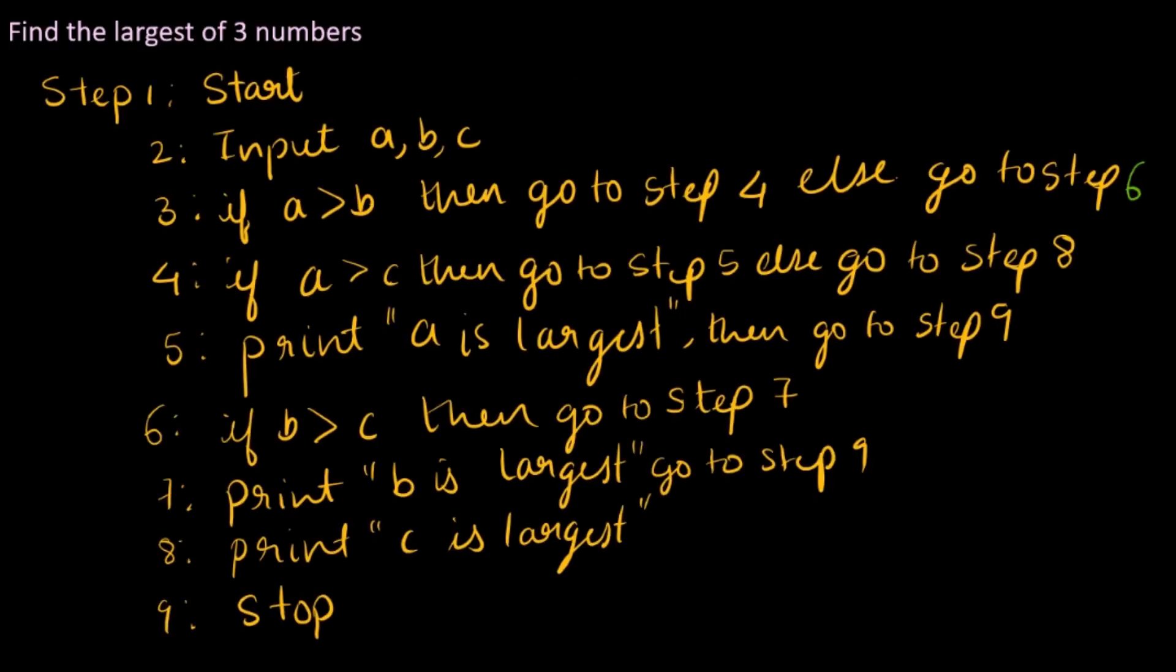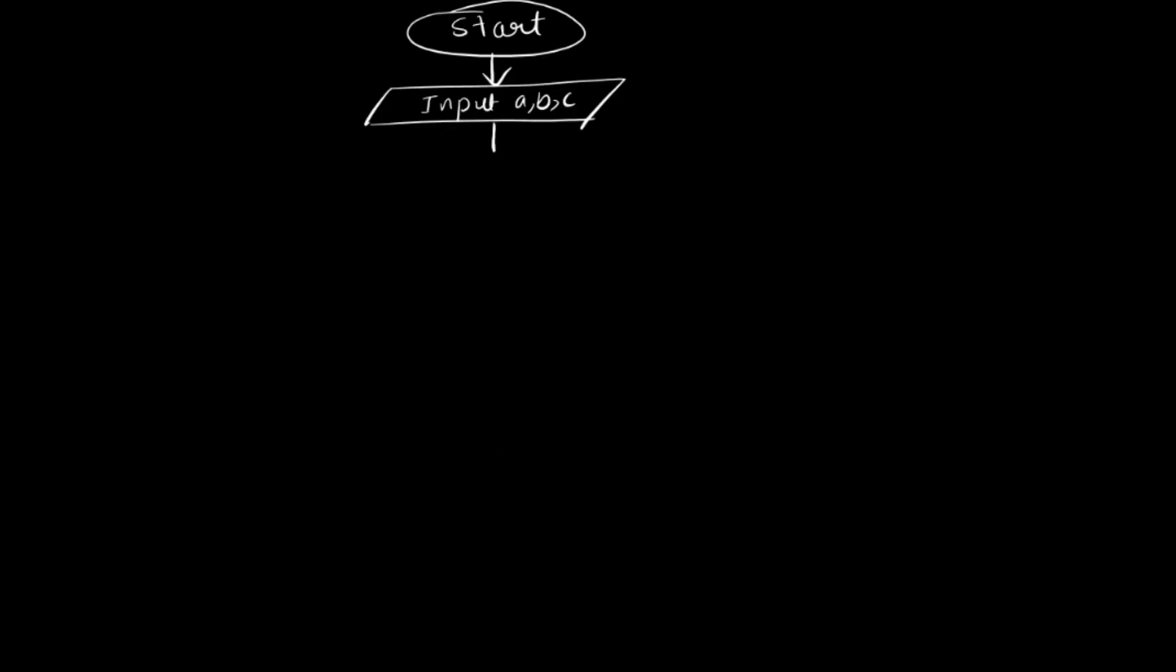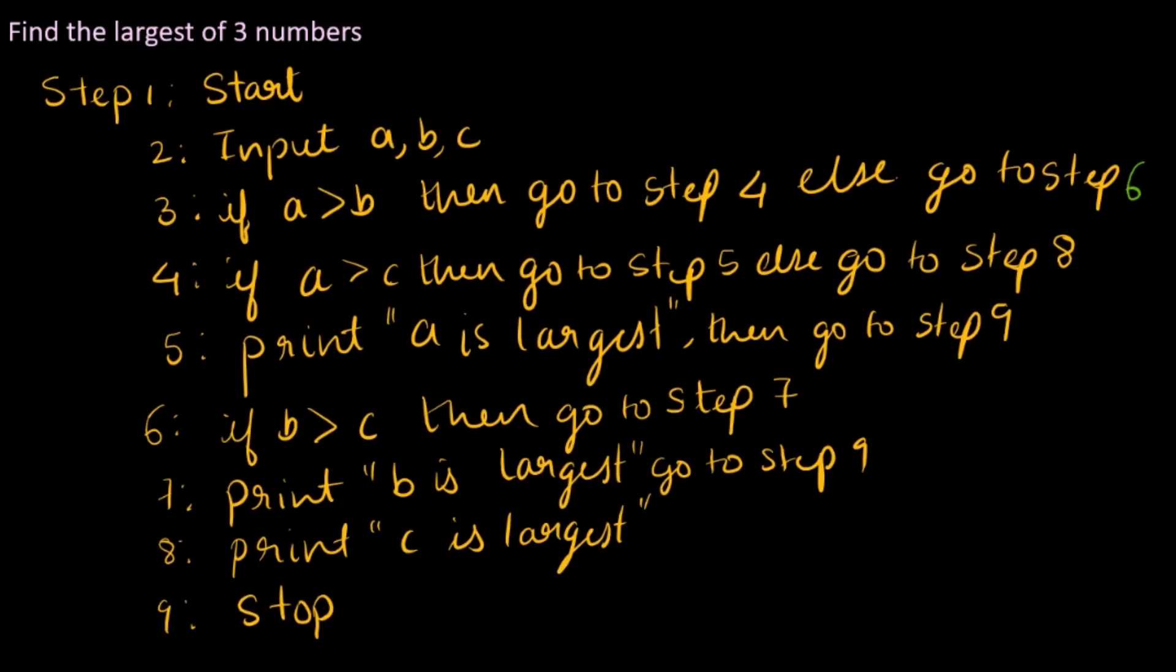So first step is start. Next step is to input A, B, C. In the next step, we have a decision being asked. So the decision would be in a parallelogram. So if A, what's the case? A greater than B.